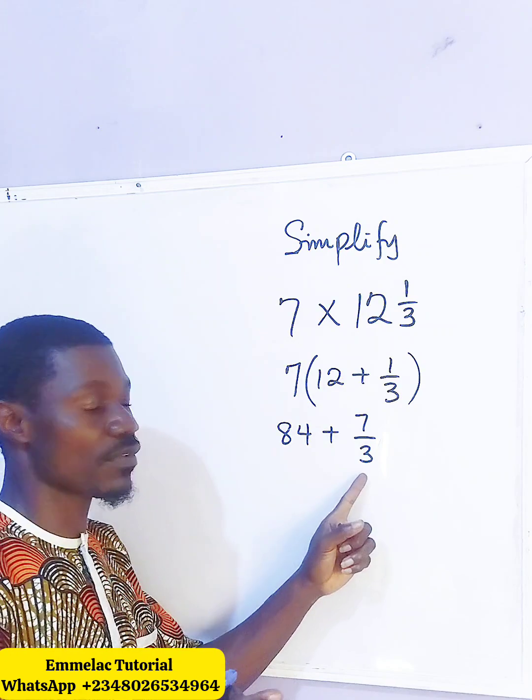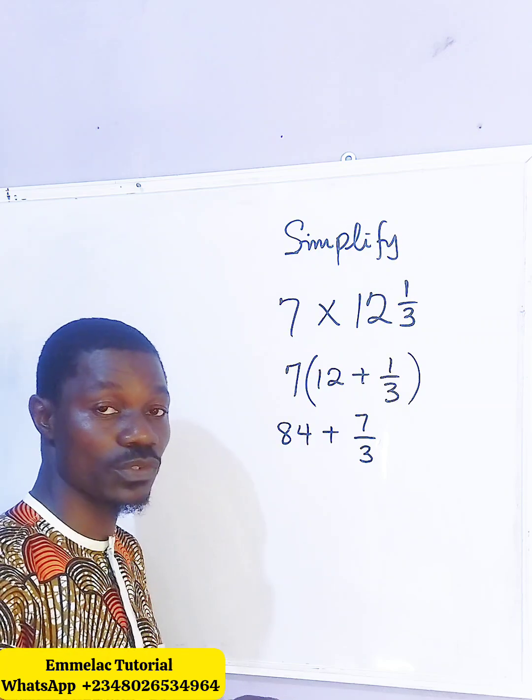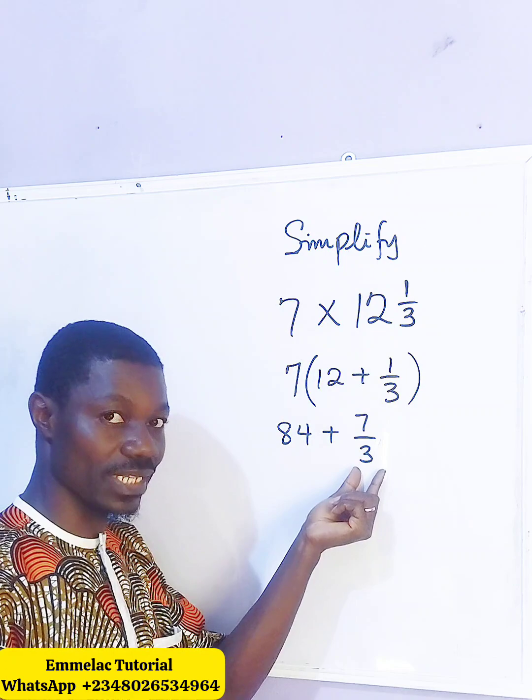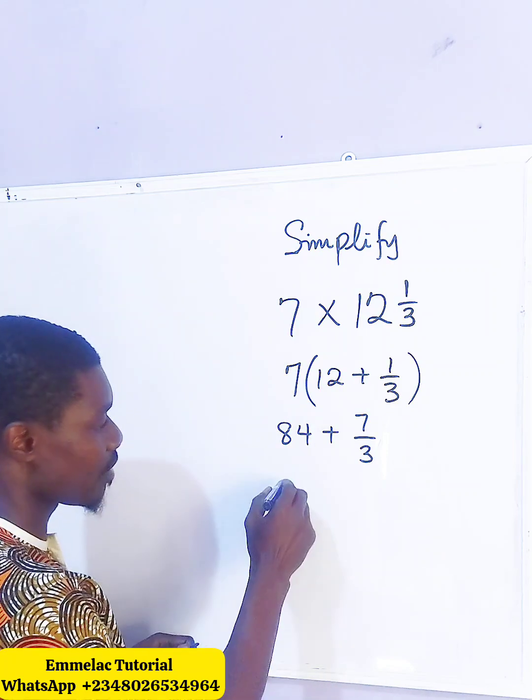The next thing we need to do, this is an improper fraction and it's not proper for us to have it that way. So what is the lowest multiple of 3 that we can get in 7? And that is 6.